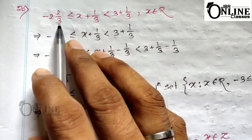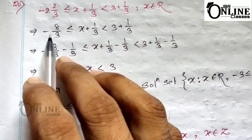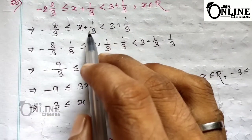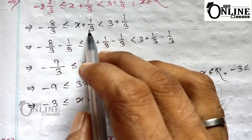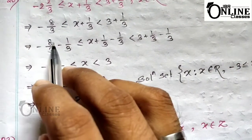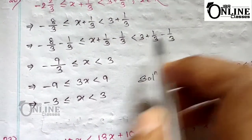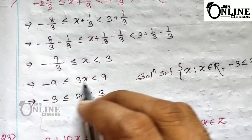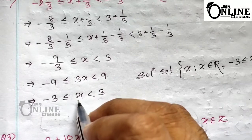Sum number 20: the given inequation is −2⅔ ≤ x + 1/3 < 3 + 1/3, where x ∈ R. Converting: −8/3 ≤ x + 1/3 < 10/3. To eliminate the +1/3 in the middle, subtract 1/3 from all sides: −8/3 − 1/3 ≤ x + 1/3 − 1/3 < 10/3 − 1/3, giving −9/3 ≤ x < 3. Simplifying −9/3 gives −3, so we get −3 ≤ x < 3.